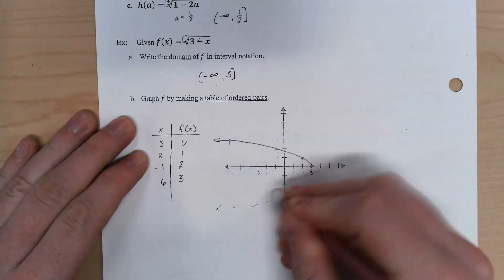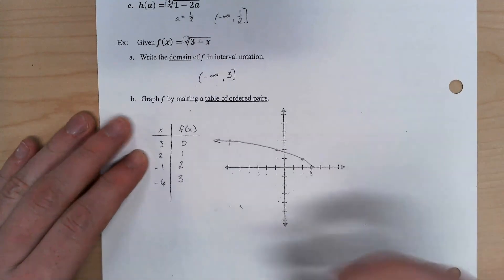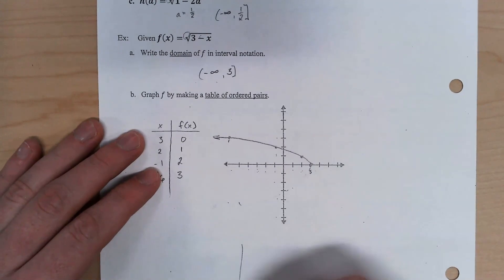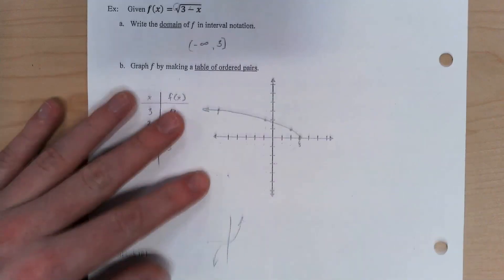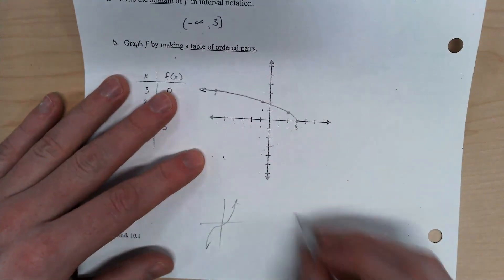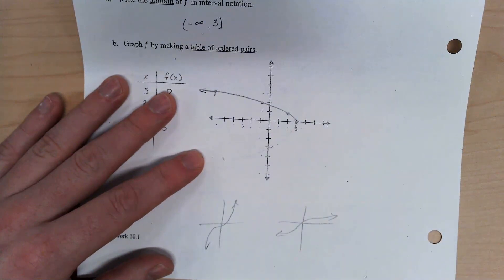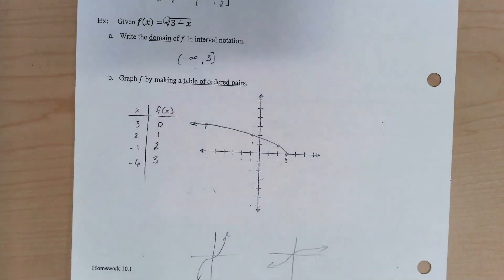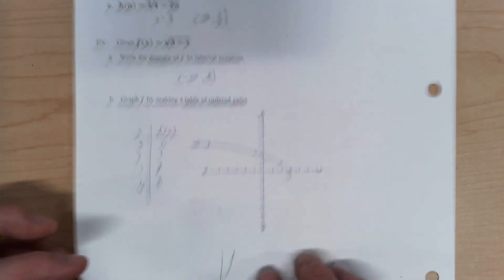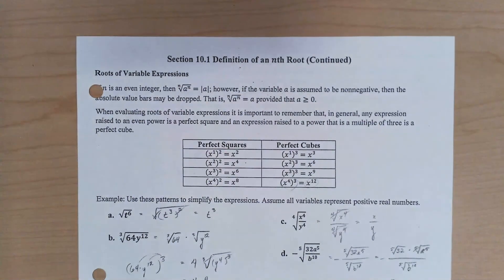If I did a cube root, well, our typical cubic graph looks like this. Looks like that. A cube root looks like that. Basically, it's basically the same thing, just turned over to its side. Alright. So that is it for 10-1. We're going to get started on 10-2 tomorrow.